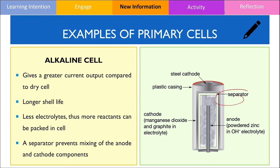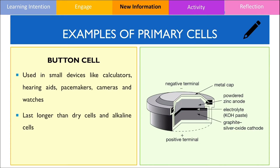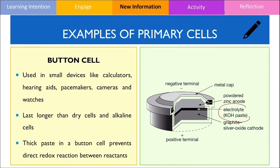The final type of primary cell I would like to talk about is the button cell. These batteries are typically found in small devices like calculators, hearing aids and pacemakers. In these devices, replacing the battery regularly would be undesirable, so they are designed to have a longer battery life compared to dry cells and alkaline cells. Similarly to a dry cell, it also contains a thick paste to prevent the direct redox reaction between the reactants and minimise thermal energy being produced.